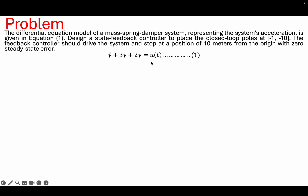This is our problem. We are given a differential equation model for a mass-spring-damper system and we are tasked with designing a state feedback controller that will drive the system to stop at a position of 10 meters from the origin, achieving zero steady state error. The state feedback controller should place the closed loop poles at locations of minus 1 and minus 10.